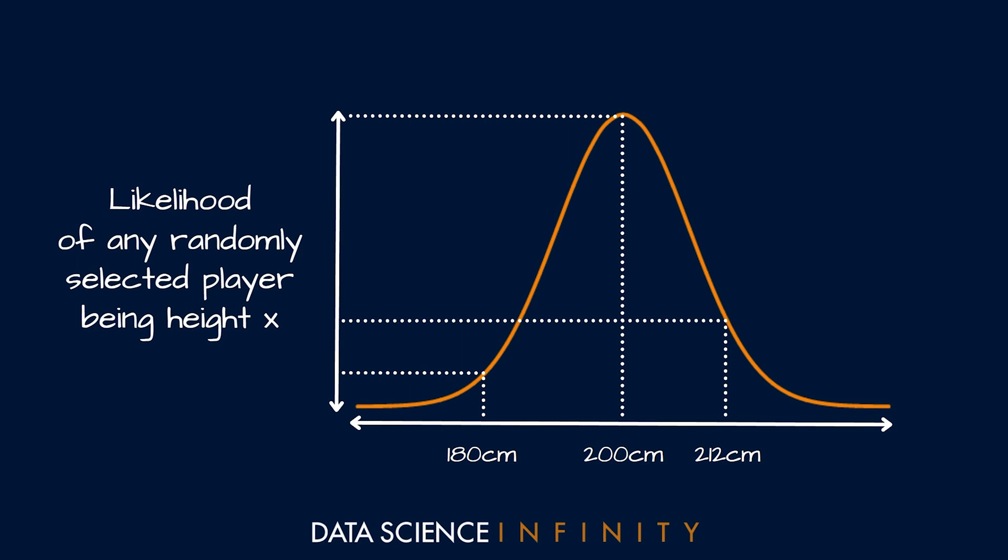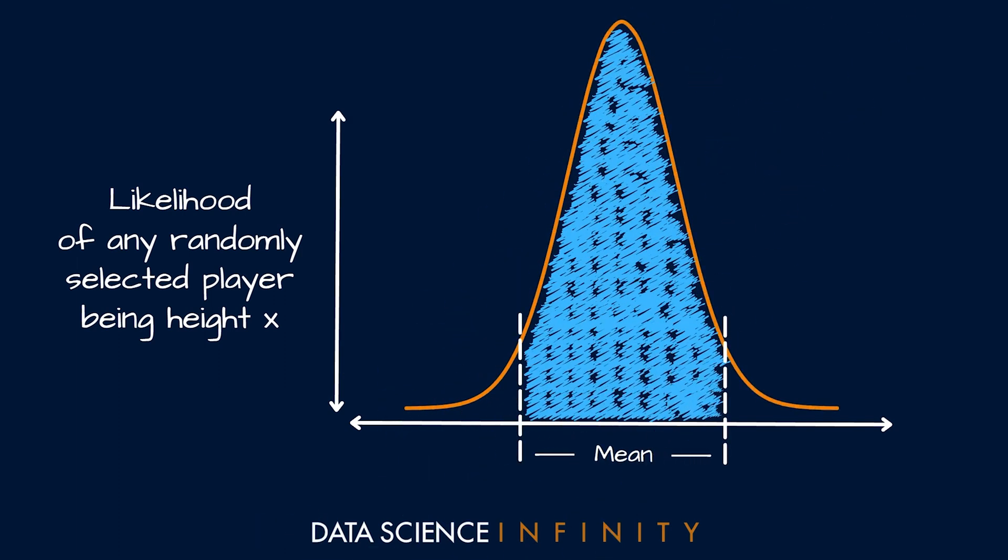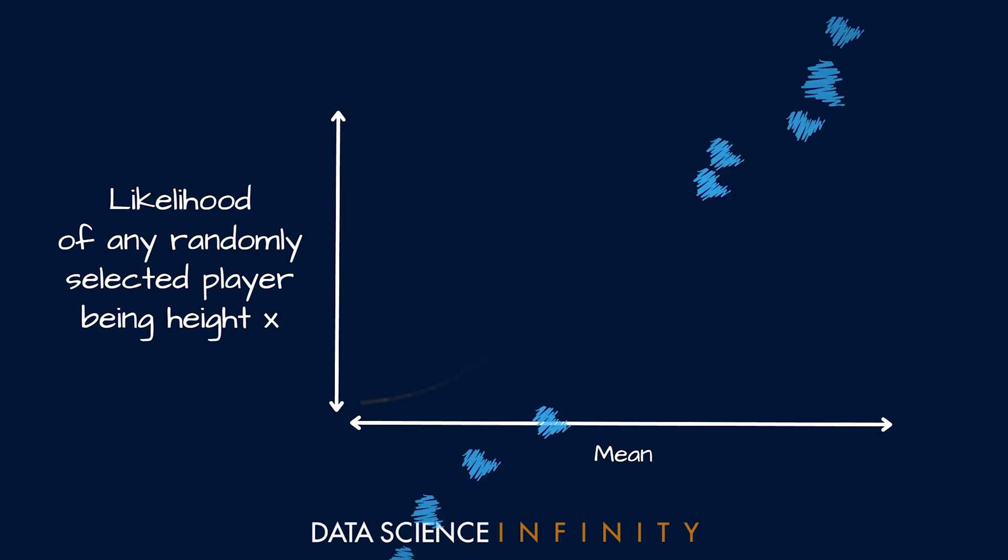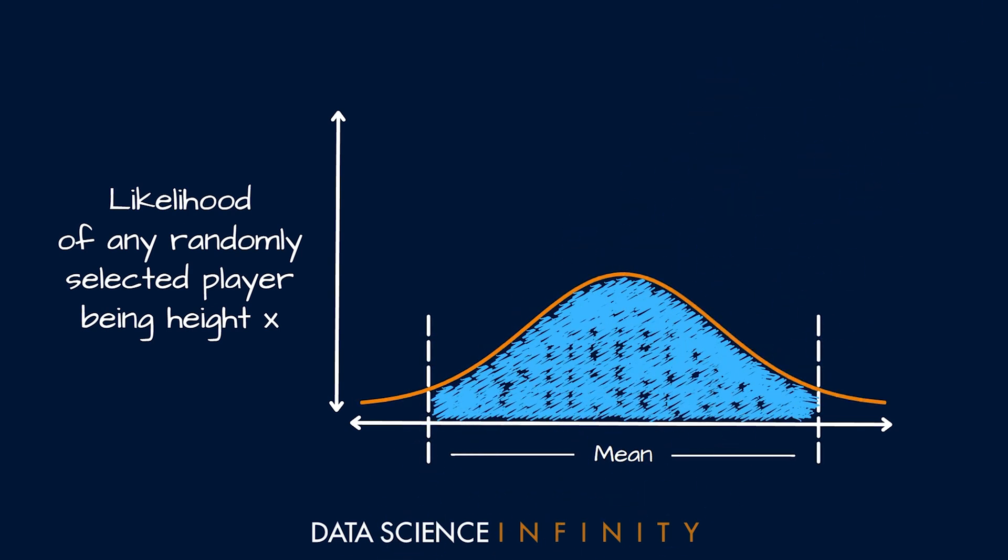So whether our curved line there is taller and skinnier, or in other words, there is a higher proportion or higher density of players near the mean height, or conversely, if it is wider and flatter, which would tell us that the heights of players in our sample or population are more evenly spread from short to tall.